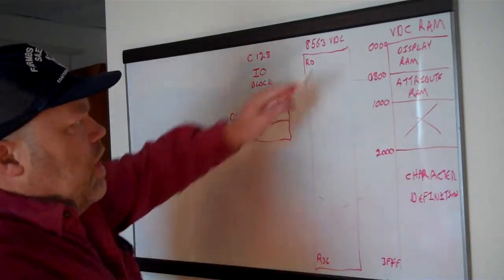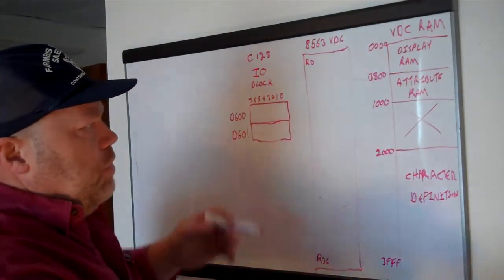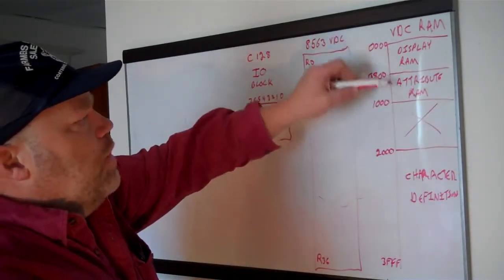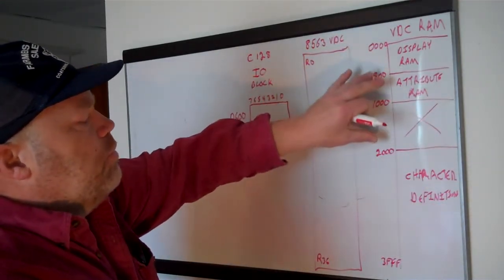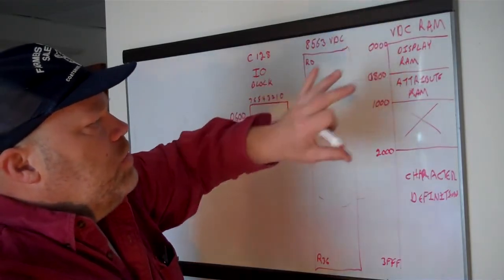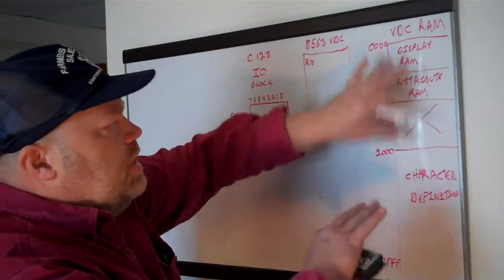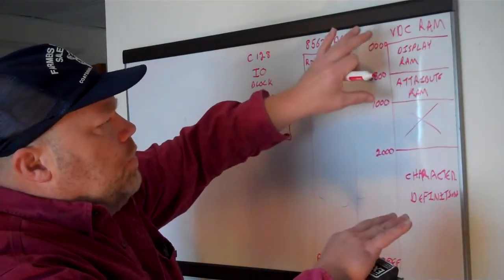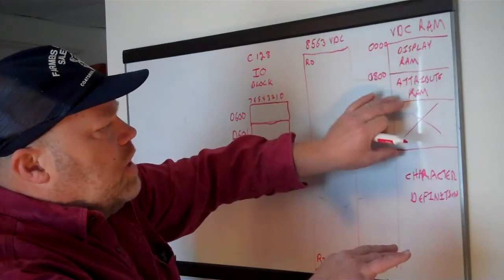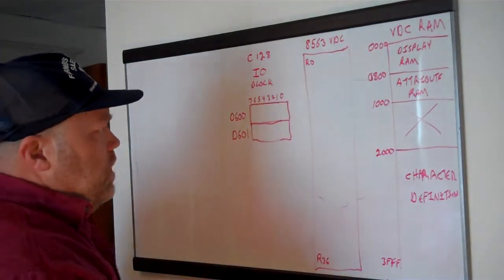Then at 2000 down to 3FFF there are the character definitions. These get copied over from the character ROM — the same characters the 40-column screen uses — but they get copied into this RAM so the 80-column chip can use them. This area here is just unused, so you have an extra 4K you could use to copy extra stuff in. You could basically have two different screens in memory at once in this video memory, with display RAM and attribute RAM for each, and switch back and forth.